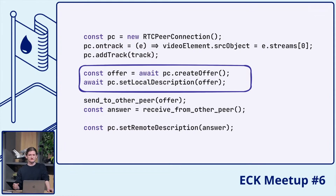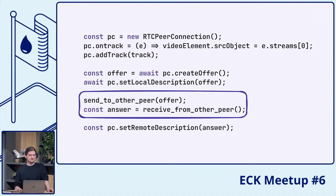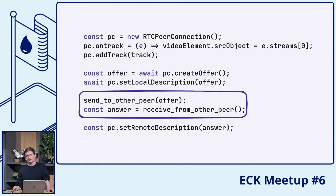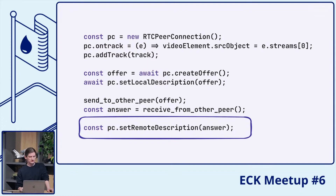We have to create the answer, set it as our local description, and then somehow send the answer to the other peer. Even though WebRTC itself is peer-to-peer for media transfer, we have to get the offer from one peer to another, and this is not specified by WebRTC itself. Usually we use something like a WebSocket server to relay the messages. We get the offer to the other peer, they apply the offer, create an answer, and then we get the answer and set it as our remote description. This is when the media transmission begins, and assuming the other peer added some tracks, we can actually see the video or audio in the HTML video element.